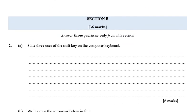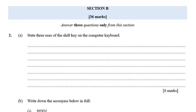Now we are at part (b), which says: state three uses of the Shift key on a computer keyboard. The Shift key does a lot of things. One: it is used to type capital letters. Two: it is used to type symbols. Three: it is used in combination with other keys to play games. Four: it is combined with other characters to produce special text.